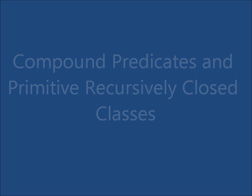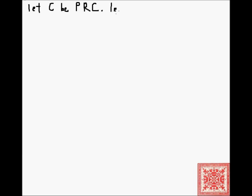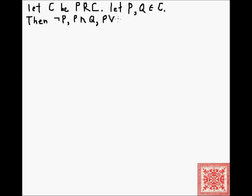Let's talk about compound predicates and primitive recursively closed classes of functions. This is theorem 5 in chapter 3 of 'Computability, Complexity and Languages' by Davis, Weyuker, and Segal. Let C be some primitive recursively closed class, and let predicates P and Q be in C. Then not-P, P-and-Q, and P-or-Q will also be in C.